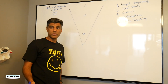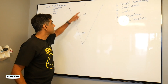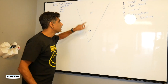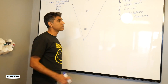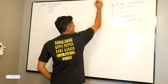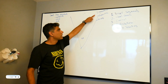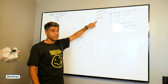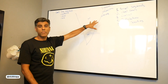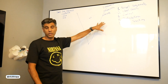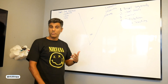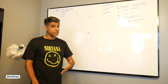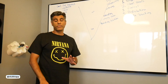We break our funnel into three segments: top of funnel, middle of funnel, and bottom of funnel. Top of funnel is all about engagement, prospecting, and nurturing — those are the three top-of-funnel goals our clients have. How to engage people, how to prospect for better clients, and how to nurture those prospects.